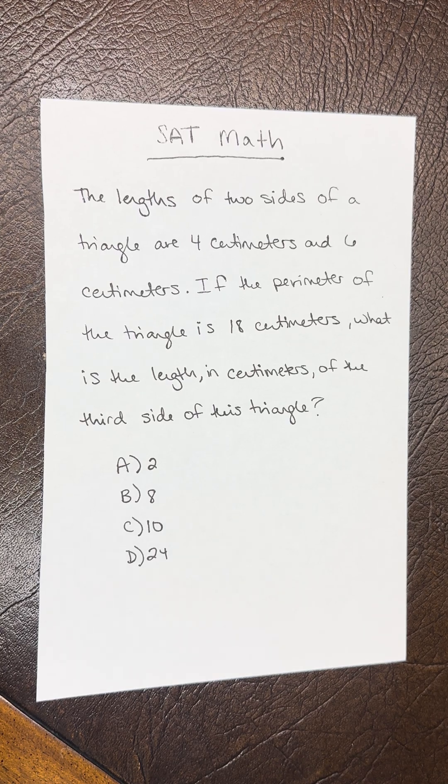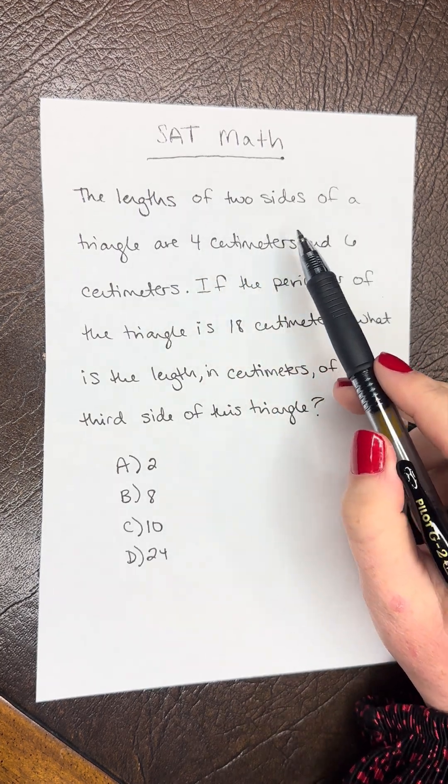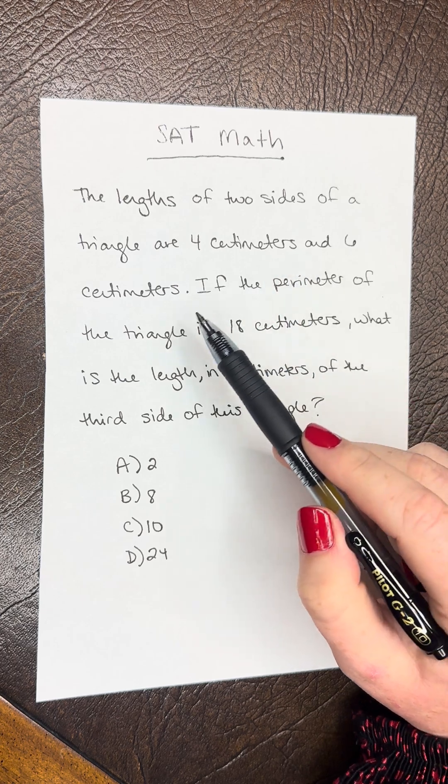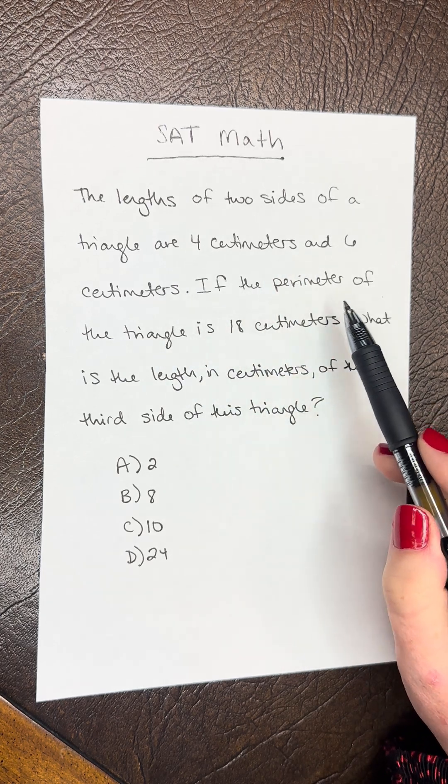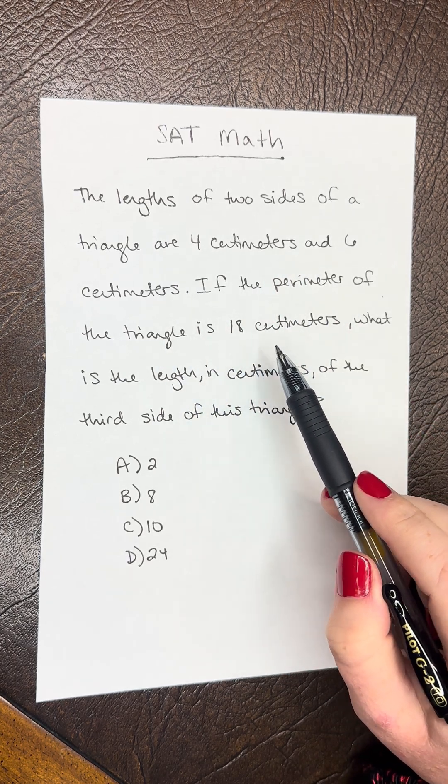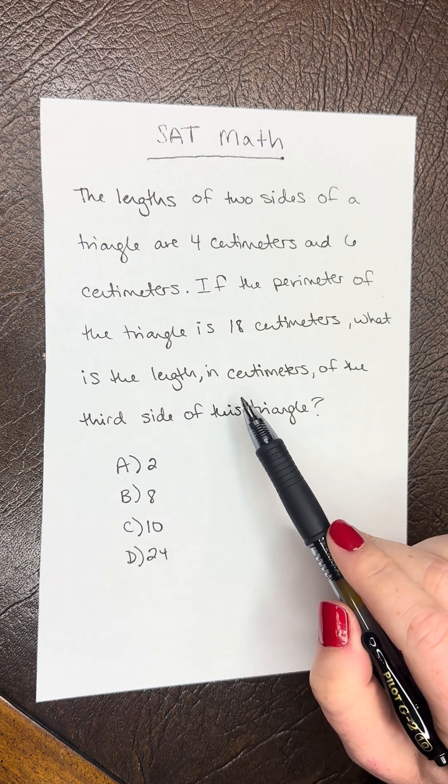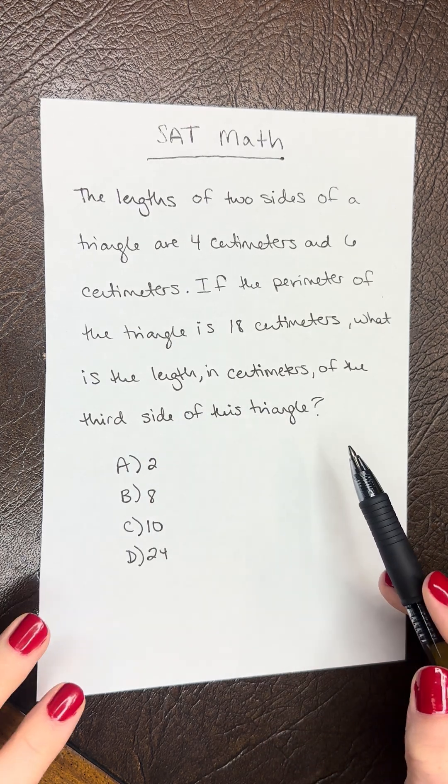SAT math question of the day. The lengths of two sides of a triangle are 4 centimeters and 6 centimeters. If the perimeter of the triangle is 18 centimeters, what is the length in centimeters of the third side of this triangle?